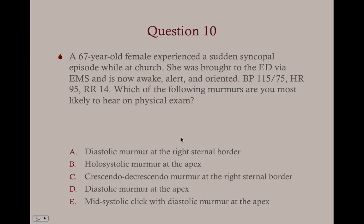Question ten: A 67-year-old female experienced a sudden syncopal episode while at church. She was brought to the ED via EMS and is now awake, alert, and oriented. Blood pressure 115/75, heart rate 95, respirations 14. Which murmur are you most likely to hear on physical exam? A, diastolic murmur at the right upper sternal border; B, holosystolic murmur at the apex; C, crescendo-decrescendo murmur at the right upper sternal border; D, diastolic murmur at the apex; or E, midsystolic click with diastolic murmur at the apex? The answer is C.